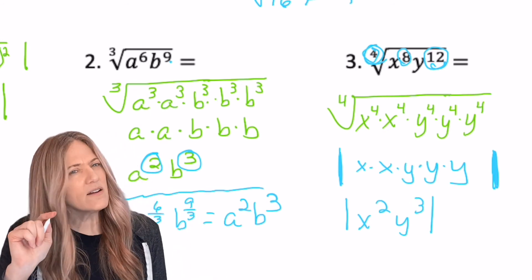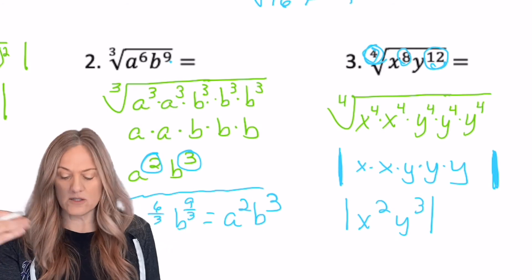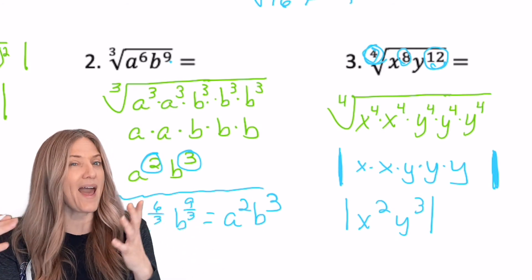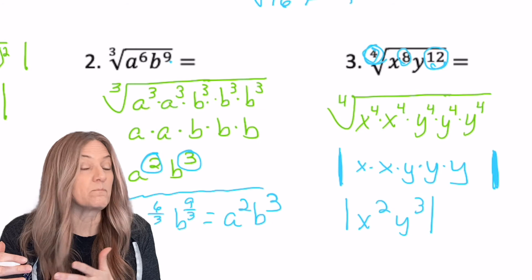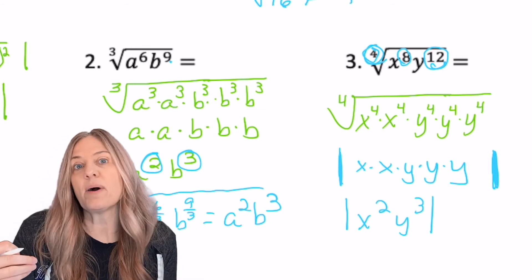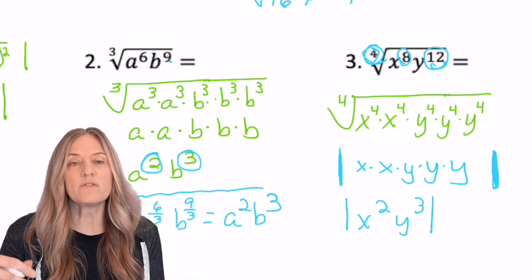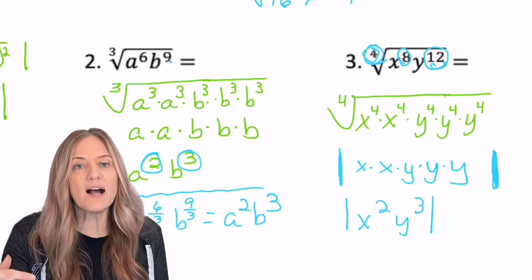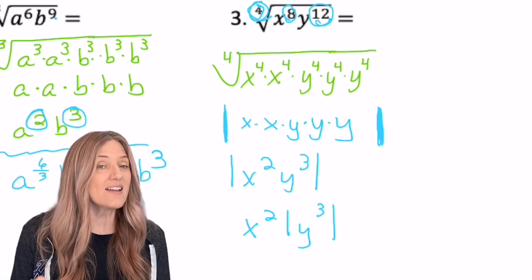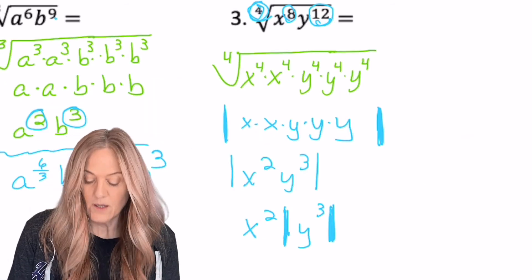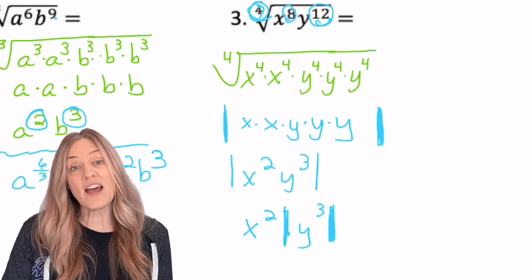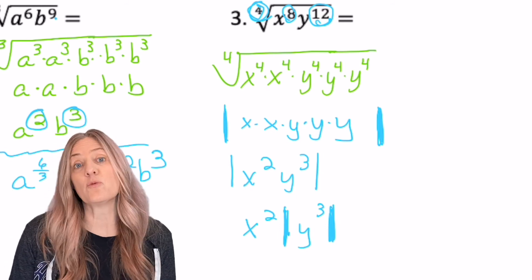Now consider the absolute value sign. Do I need it around the x squared and the y cubed? Which one is not possible to get a negative answer from? Well, if you square anything, you're going to get positive. So the x squared does not need the absolute value symbol on it. So for my final answer, I'll have x squared times the absolute value of y cubed.